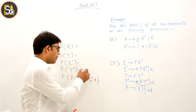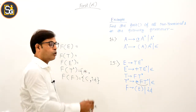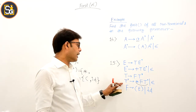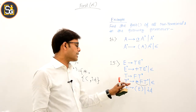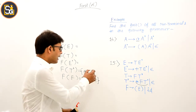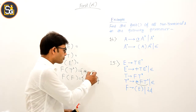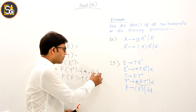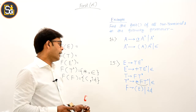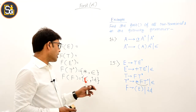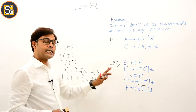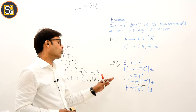Now come to T-dash. T-dash derives null, to iska matlab hai null bhi iske FIRST mein aana hi aana hai. Aur koi aur kuch T-dash derive nahi kar raha, to T-dash ka FIRST sirf: null (epsilon).